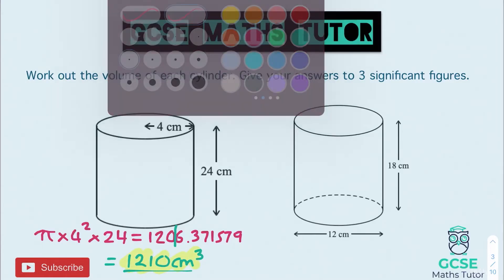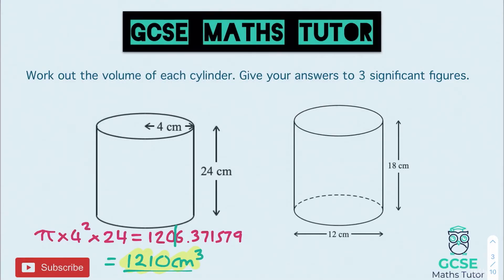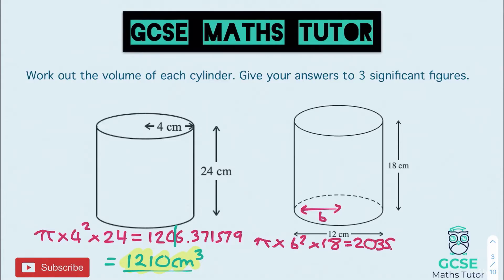Moving on to the second question, this time we've been given the diameter, so I'm just going to note on the diagram that the radius is 6, so I don't forget. We're going to do pi multiplied by the radius squared — so pi times 6 squared — multiplied by the height of 18. Pi times 6 squared times 18 gives us an answer of 2035.75204.